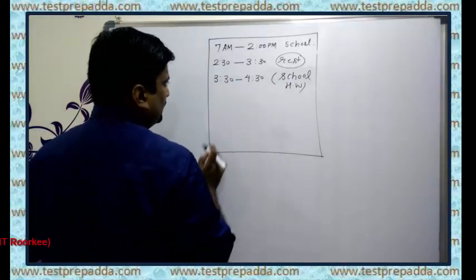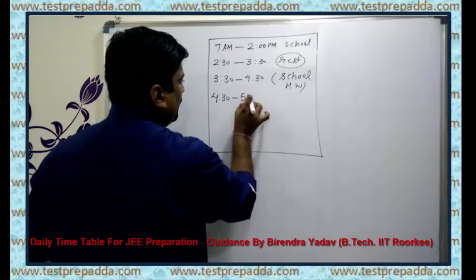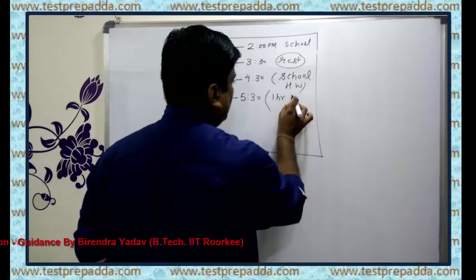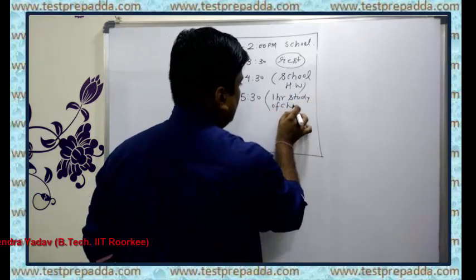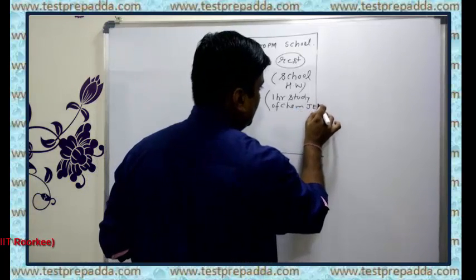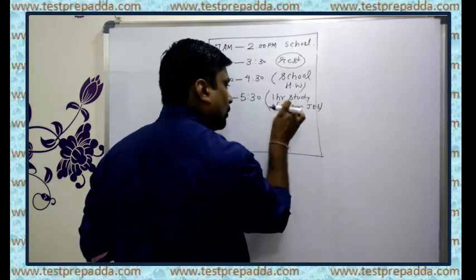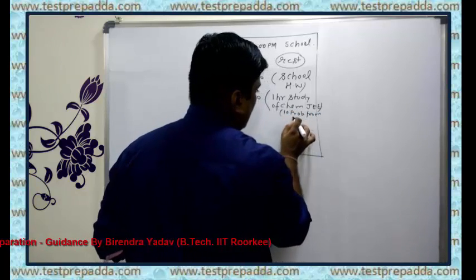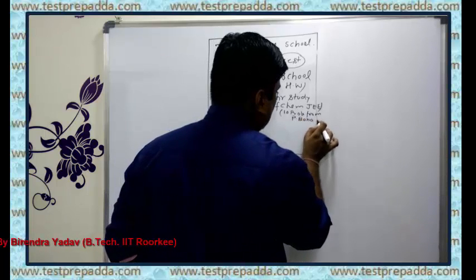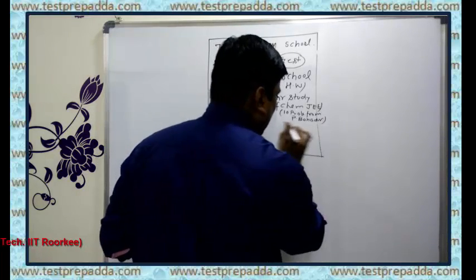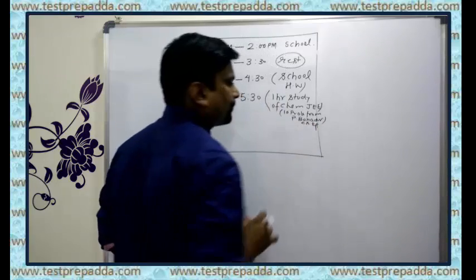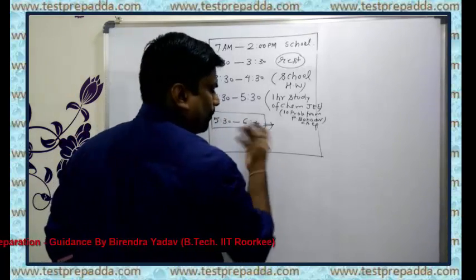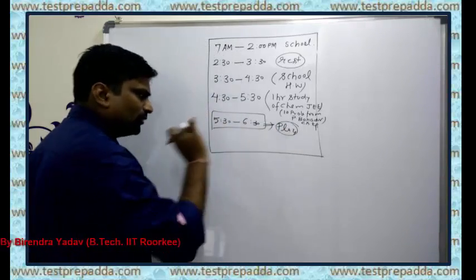After that, from 4:30 to 5:30, write: 1 hour — study of Chemistry for JEE. Write exactly what you are going to do in that 1 hour — for example, 10 problems from P. Bahadur Numerical Chemistry, chapter: Chemical Equilibrium. Then, from 5:30 to 6:30, you can go play or take rest — whatever you want to do.